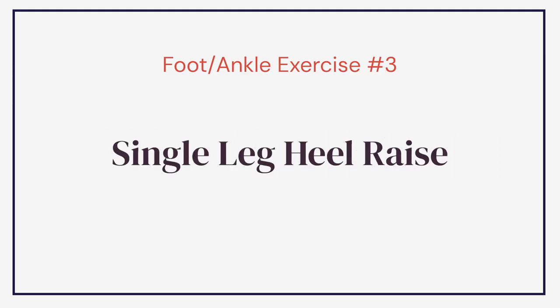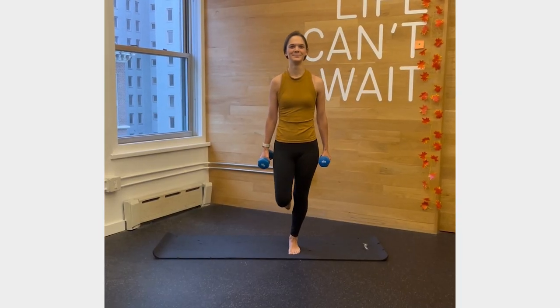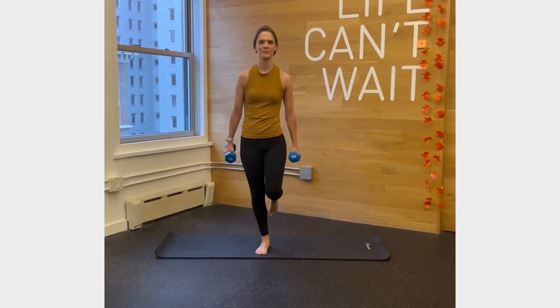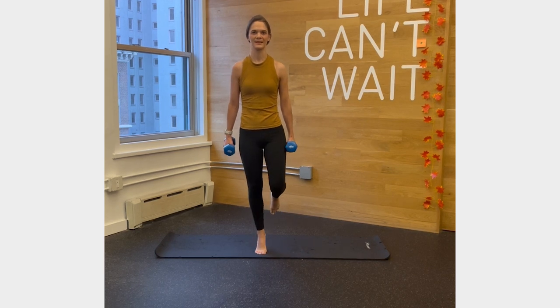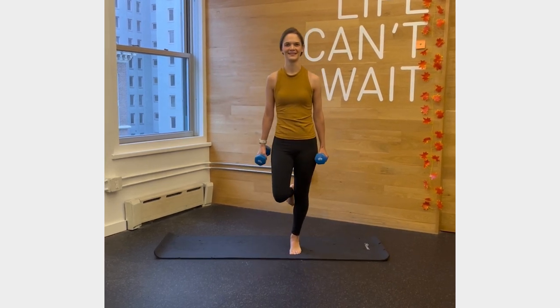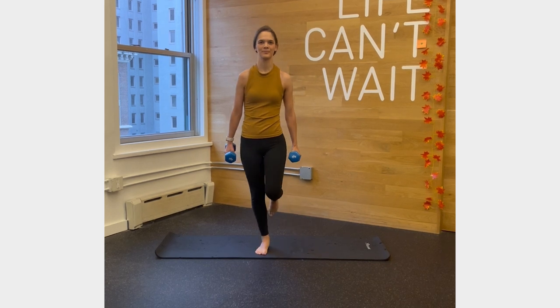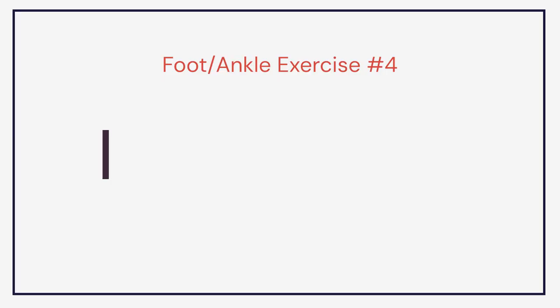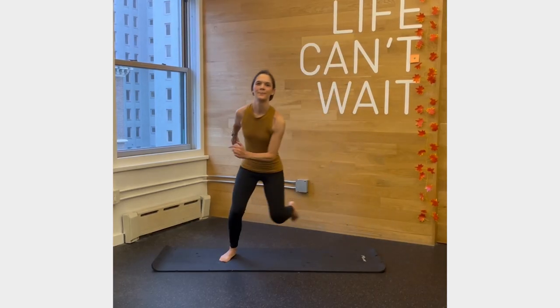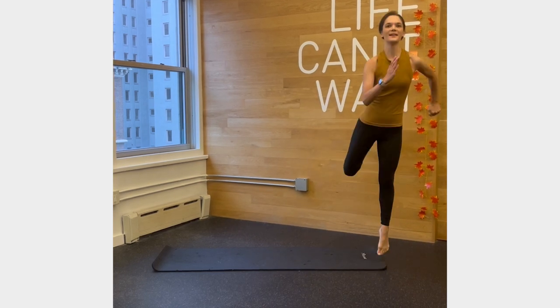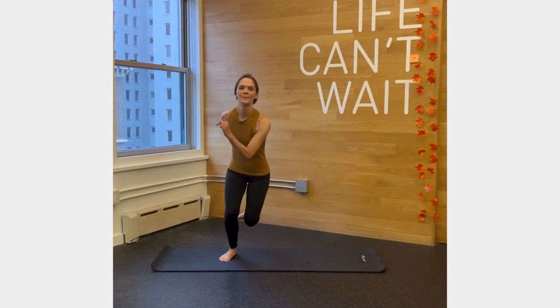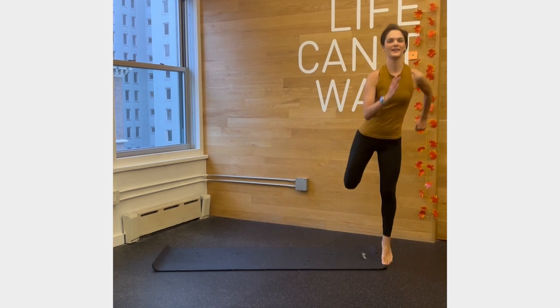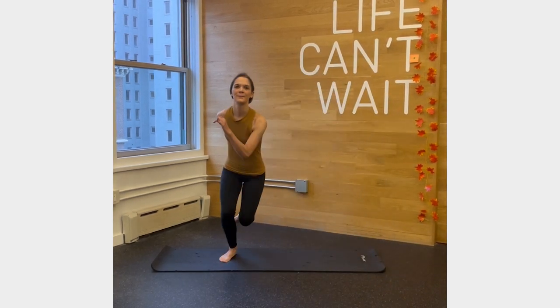Next is a single leg heel raise — standing on one leg, making sure the ankle goes straight in line with the second toe as it comes up and down, without rocking side to side. Adding dumbbells or resistance is an excellent challenge. Then for agility training, we have a skater jump — lateral jumping side to side — and a single leg hop, incorporating multi-planes of movement and challenging your body to stick the landing and keep leg alignment.